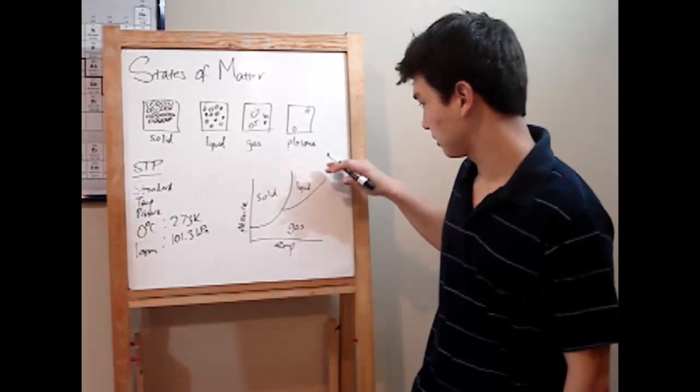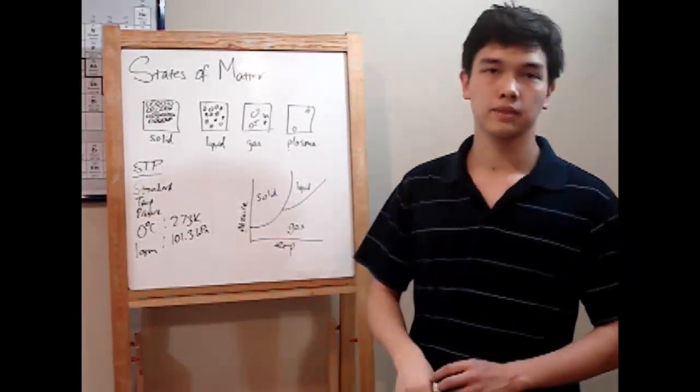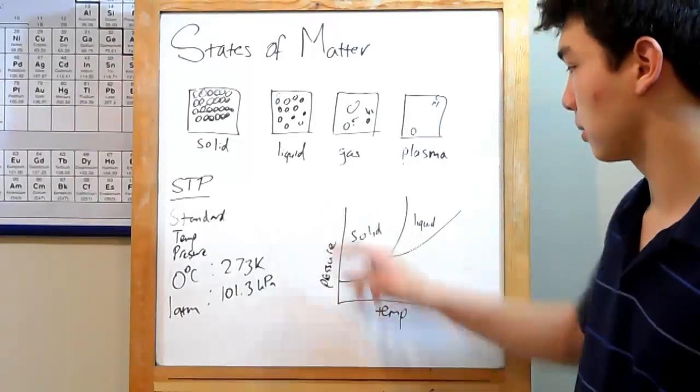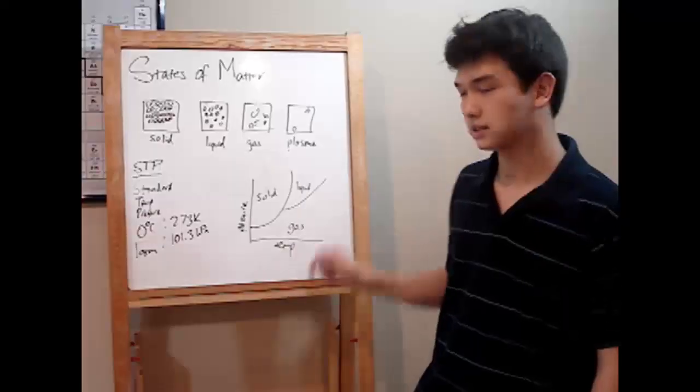So, the last thing to cover in phases is the phase change diagram. That's this thing over here. You've got temperature on the x-axis and pressure on the y-axis. Then you'll have a bunch of lines, and the solid, liquid, and gas spaces will be labeled.